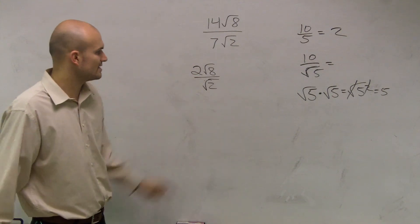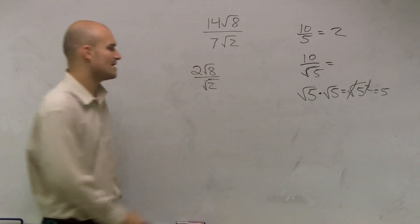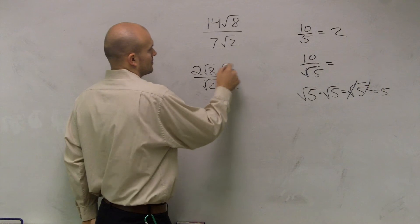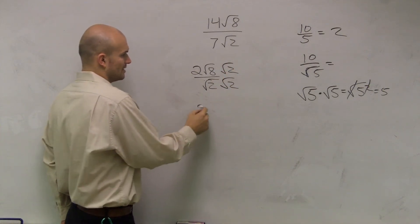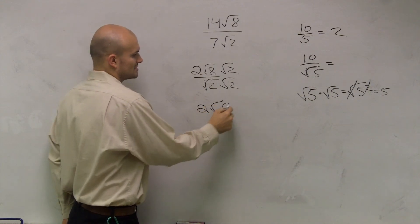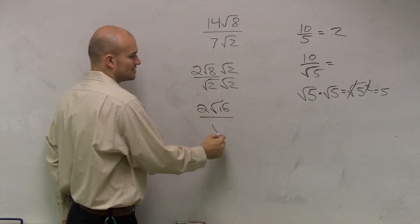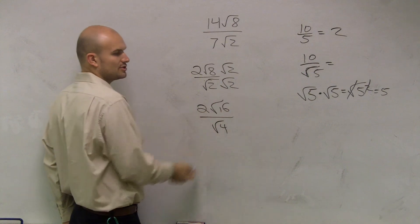So, I multiply radical two times radical two, so what I get is two times radical 16 over two times two, which is radical four, which you guys should know is two, right?